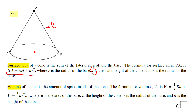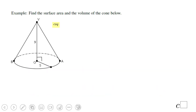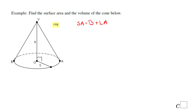The volume of a cone is very similar to that of a pyramid: one-third times area of the base times height. Let's see this example: find the surface area and volume of the cone below. Surface area equals area of the base plus the lateral area. The base is a circle: pi r squared, and the radius is 5, so pi times 5 squared equals 25 pi. Surface area will be 25 pi plus the lateral area.